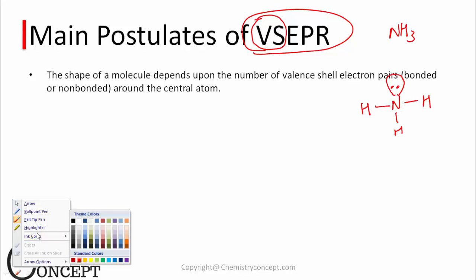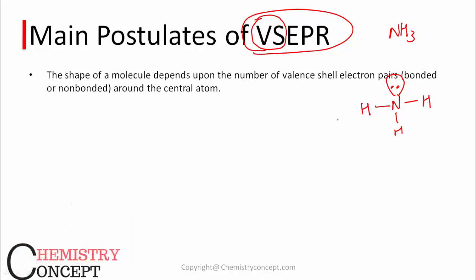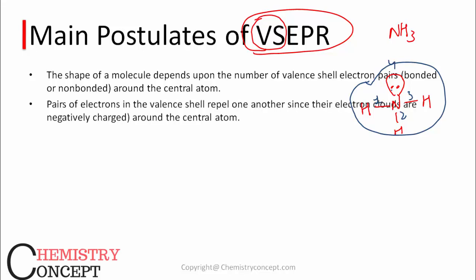So how many total valence shell electron pairs are there? 1, 2, 3, 4 — 3 bond pairs and 1 lone pair. As per this theory, the geometry of ammonia molecule will depend on all these 4 pairs of electrons, which includes lone pairs as well as bond pairs — all the valence electrons.